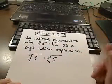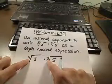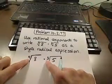Okay, if we're going to write these as a single radical expression, then the indices have to be the same, and they're not right now. There's a fourth root here and a third root there.